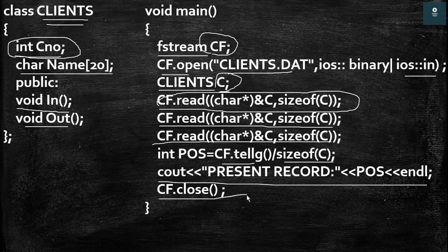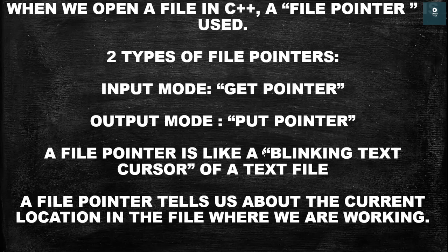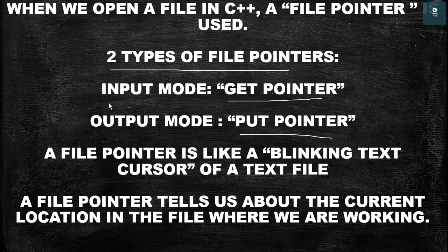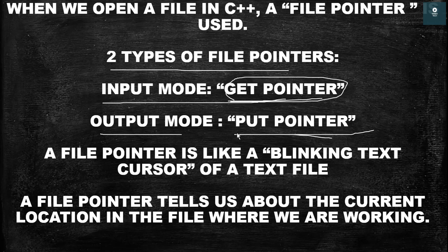To solve this question you should know some basics. The first thing is: when we open a file in C++, a file pointer is used. A file pointer is different from a normal pointer — a normal pointer is used for storing the address, but a file pointer has a different function. We have two types of file pointers: the first one is a get pointer and the second one is a put pointer. Whenever a file is opened in input mode we have a get pointer, and when the file is opened in output mode we have a put pointer. Get is for getting the input and put is for putting the output.